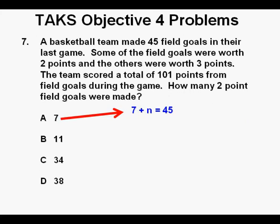For answer A we have 7 2-point field goals. So we can set up an equation to find the 3-point field goals and that would be 7 plus N equals 45. To solve for N or the number of 3-point field goals, subtract 7 from each side of the equation. 7 minus 7 cancel on the left side. We bring down what's left and that's N equals 38.